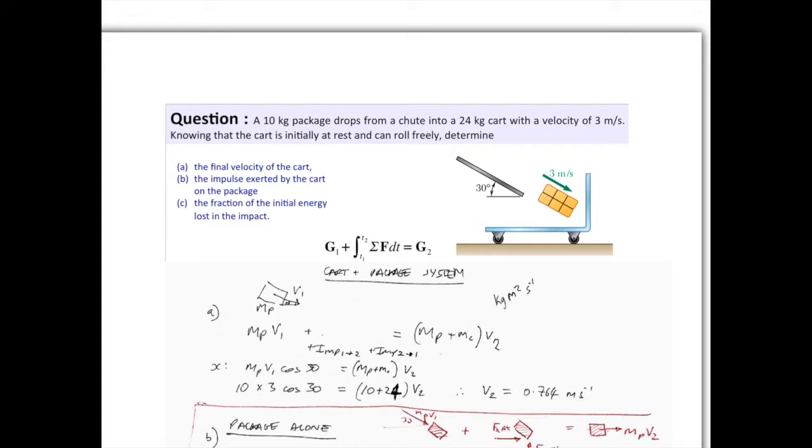Okay, so this is a good example of when we need to use impulse momentum equations. If you're looking at the system as a whole, then you don't need to worry about impulse, because the forces between the two objects in the collision, which is generally what you would be looking at, cancel each other out. So the impulses cancel each other out as well.